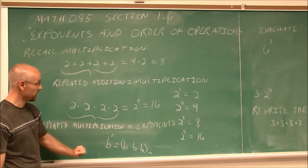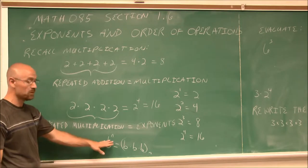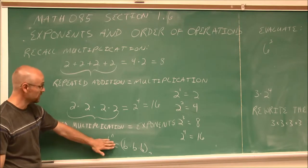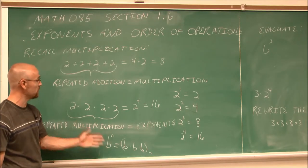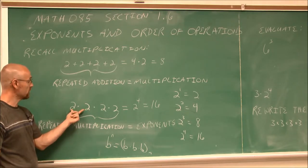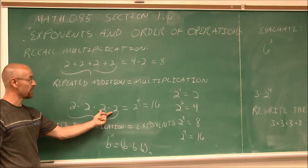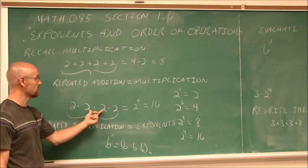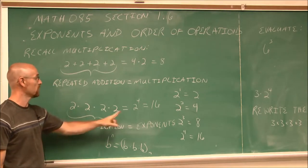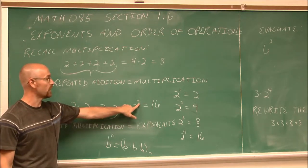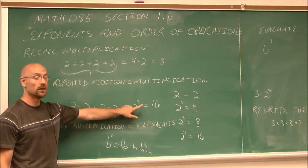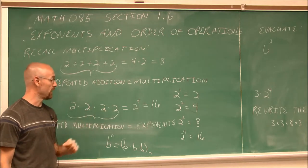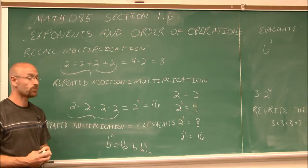Hopefully that makes sense. We're introducing variables here, but essentially we identify the base — the base is 2 — then how many times we're multiplying it, which is 4, and that's our power. Then we can find that value.